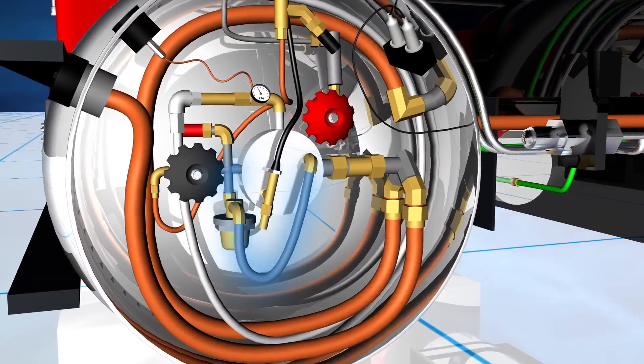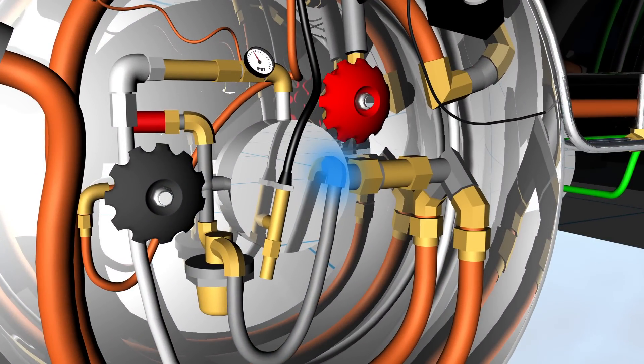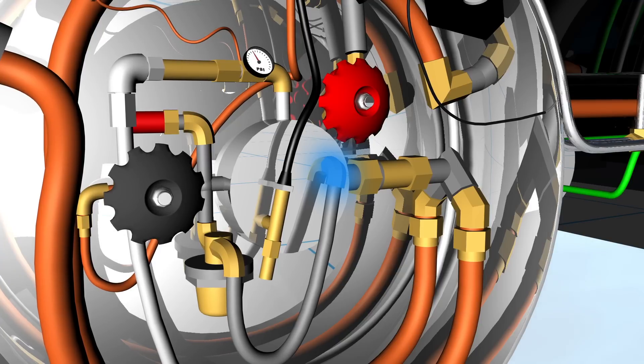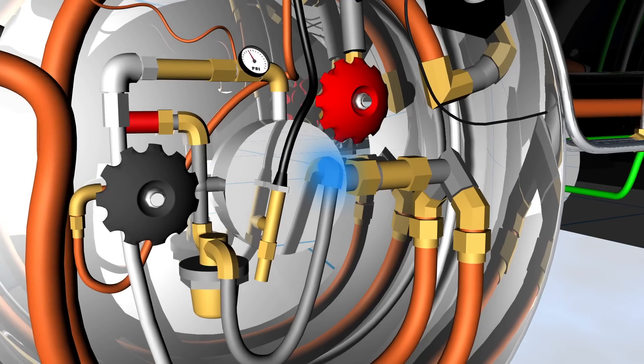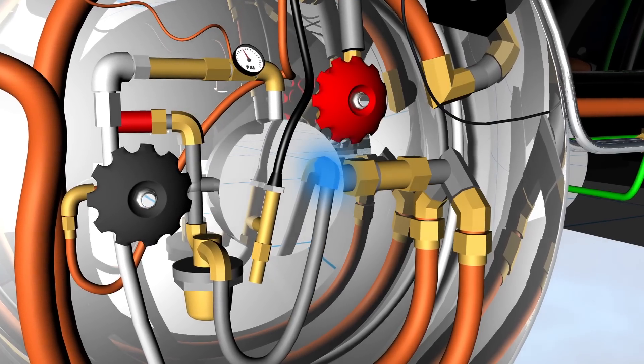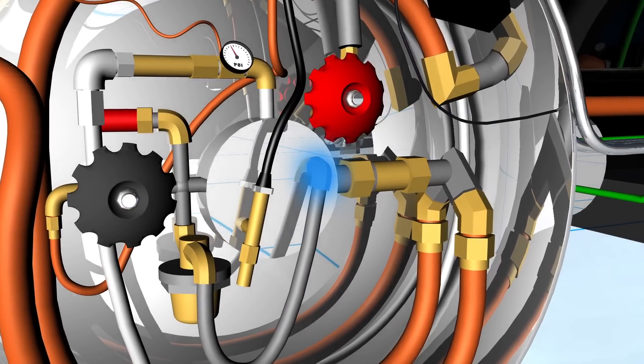The inline check valve creates a small 2 psi back pressure when liquid fuel is being withdrawn. Restricting liquid flow this way helps the pressure control regulator work more effectively to rapidly reduce tank pressure.